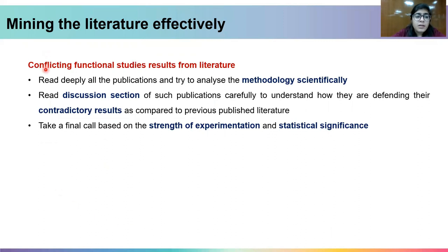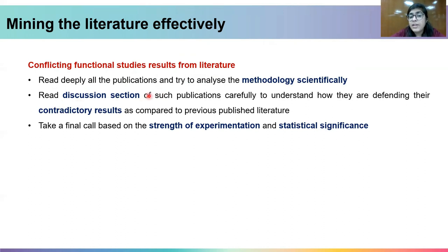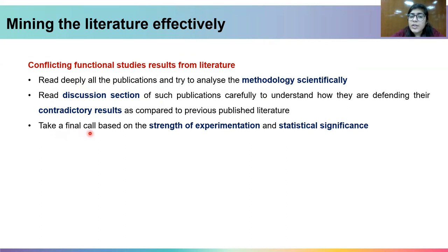In cases where you find conflicting functional studies from the literature, you should read all the publications in depth and analyze the methodology scientifically. Read the discussion section of each publication to carefully understand how the authors defend their contradictory results compared to previously published literature. You then have to take a final call based on the strength of experimentation, the validity of the functional assay, and its statistical significance — only then will you be able to reach the correct conclusion.